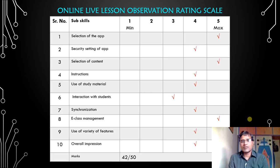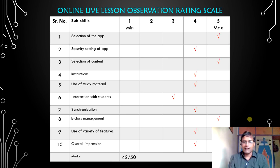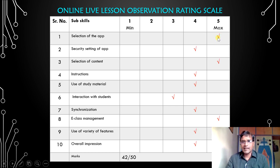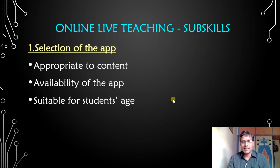This is the Online Live Lessons Observation Rating Scale, which will help student-teachers perform their best and help teacher educators assess the performance of the lesson. I have prepared this with 10 sub-skills, each having a rating scale. You can develop your own — the sub-skills can differ, and you can make changes to the suggested rating scale. As you can see, the red tick marks indicate the marks and the total is displayed, so assessment can be done in that way. Let us go through each sub-skill one by one.